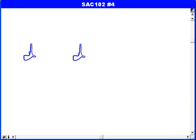In SAC-102 number 4, we've got a bullet fired from a gun with an initial velocity V.